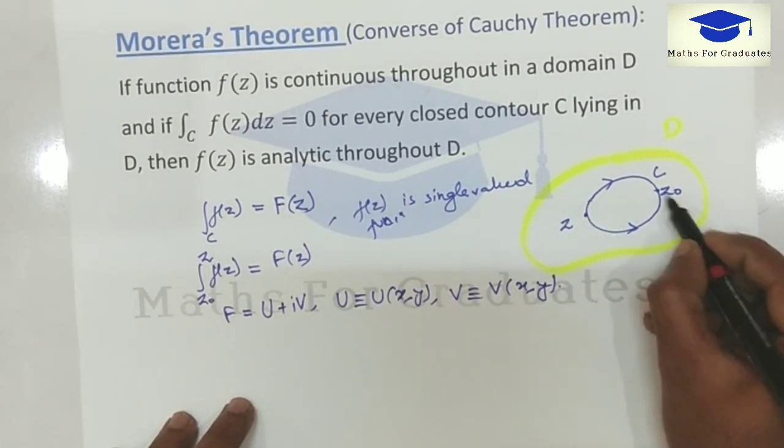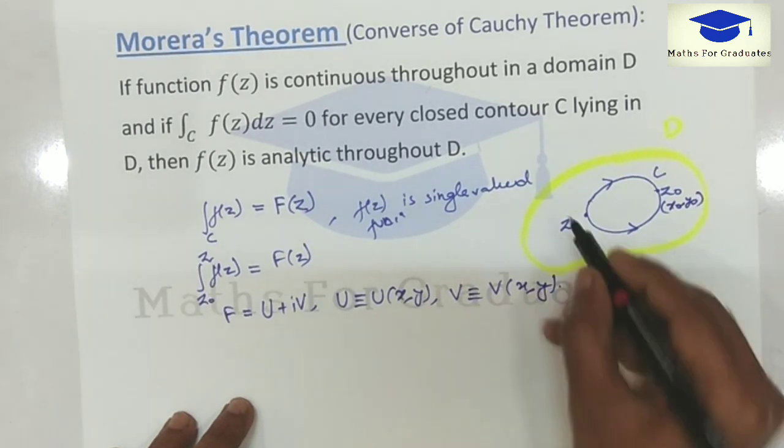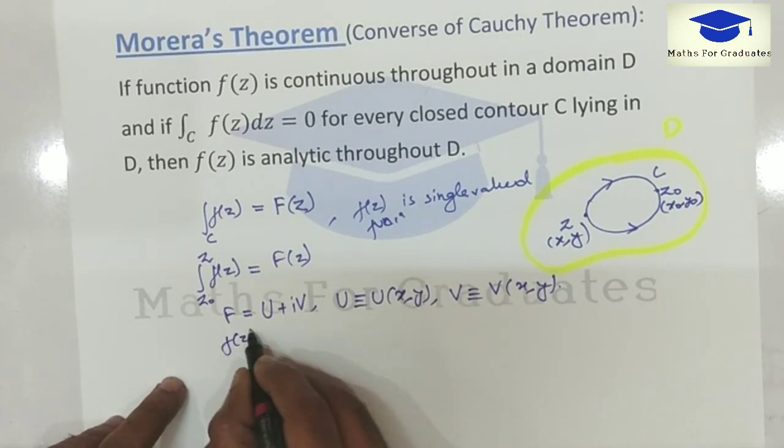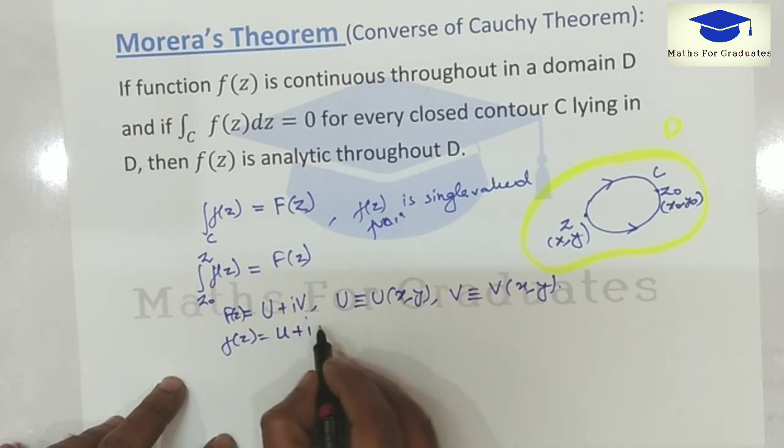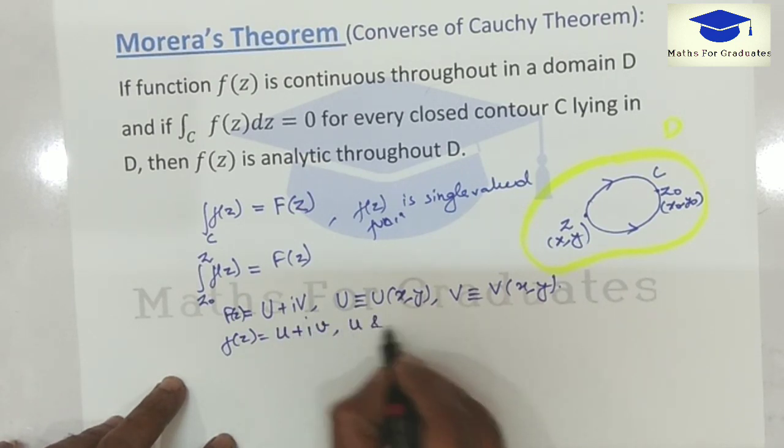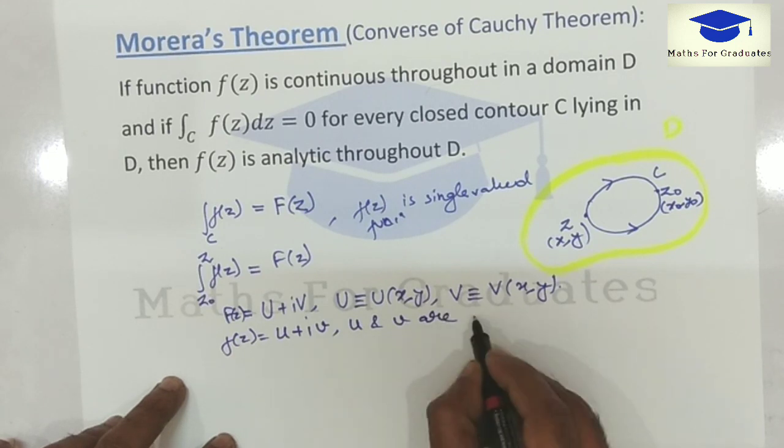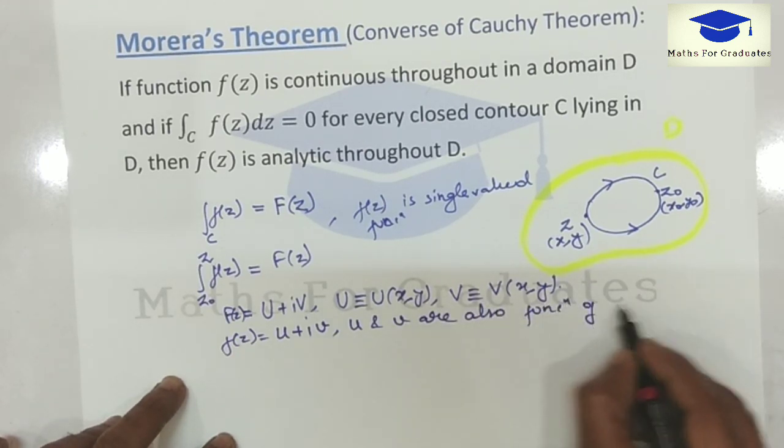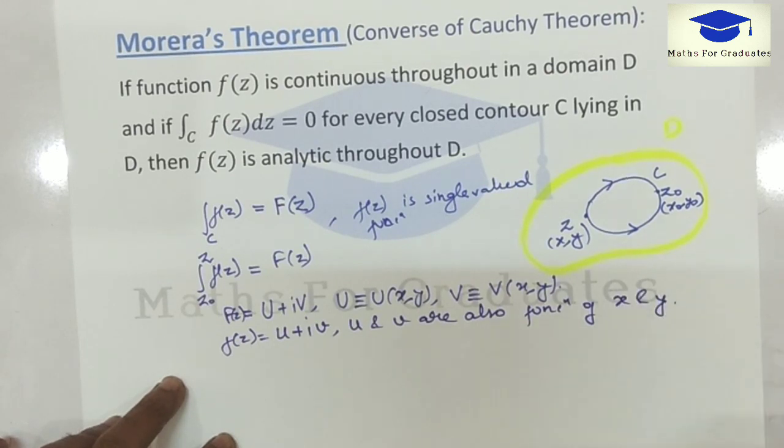And this z0 corresponds to the point (x0, y0), and this z corresponds to the point (x, y). And f, small f(z), is given by small u plus i times small v, where u and v are also functions of x and y.